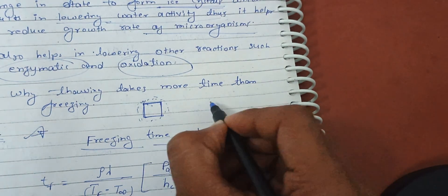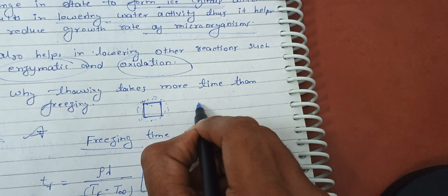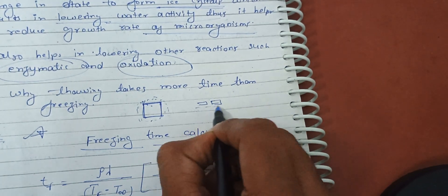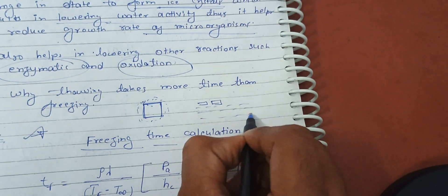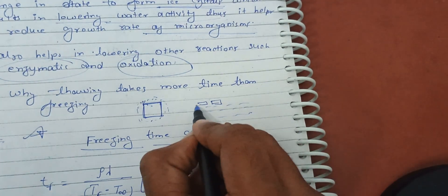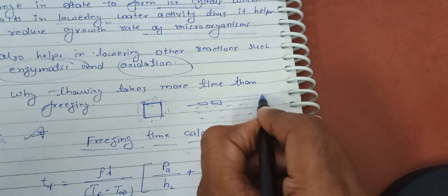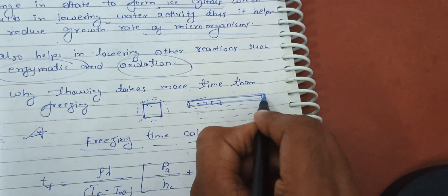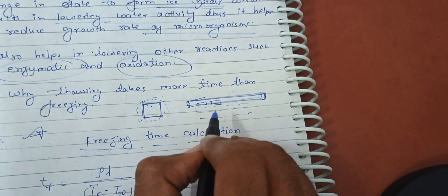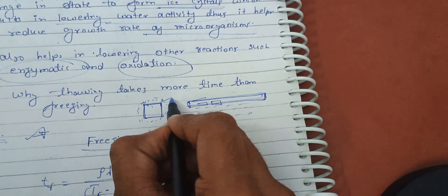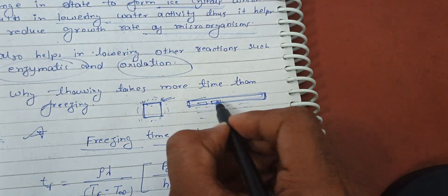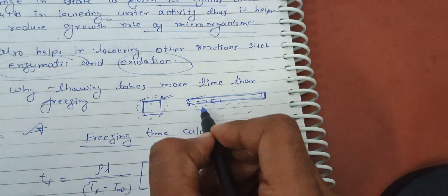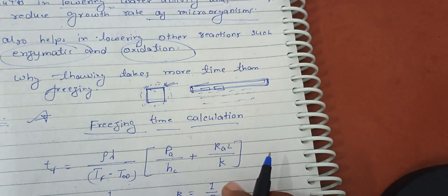In the case of freezing, we convert from liquid to solid. Freezing starts with nucleation — small ice crystals begin to form — and the outer layer becomes solid. Since solid has higher thermal conductivity and thermal diffusivity compared to liquid, freezing takes less time than thawing.